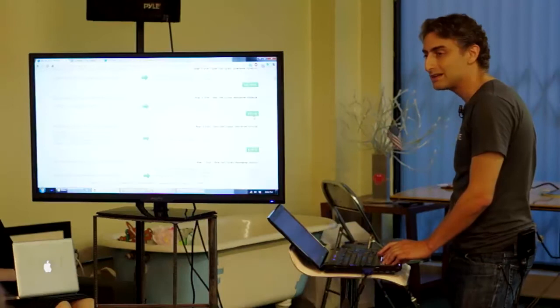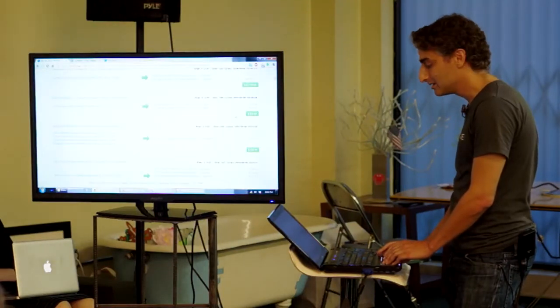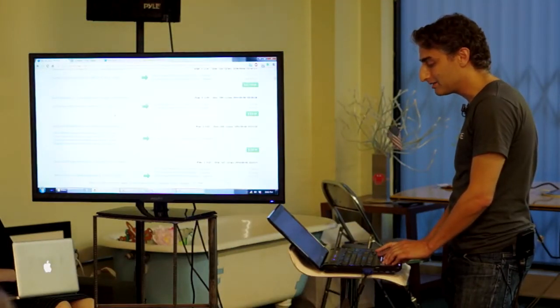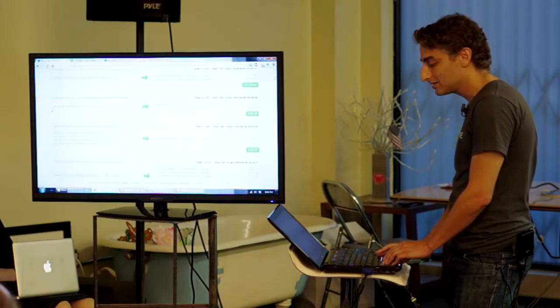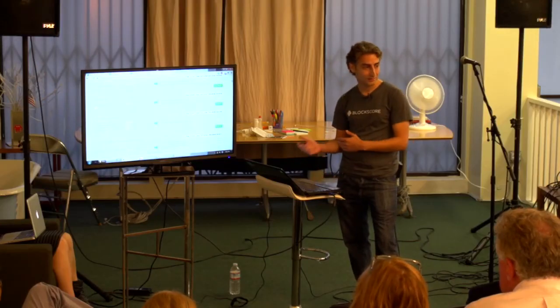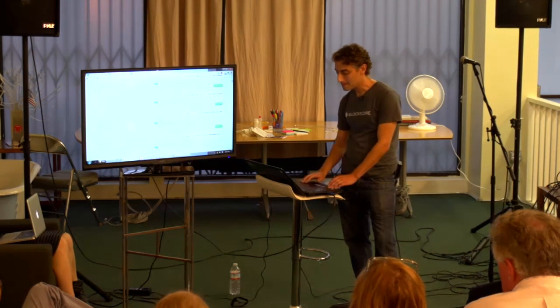But I'll just pick one at random. This one here, somebody sent $810 to another person. And all these Bitcoin addresses are the identities of where the money went from, to who it went to.